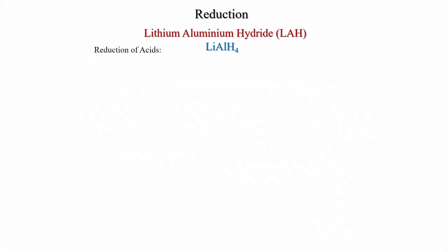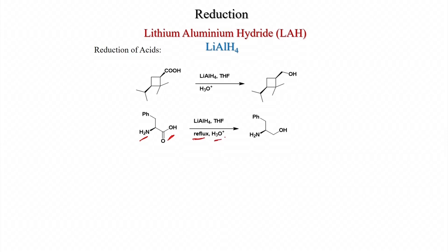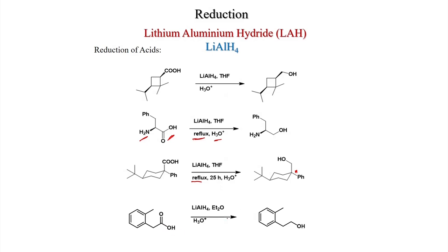Reduction of acids: cyclobutanecarboxylic acid is reduced to the alcohol with LiAlH4/THF followed by protic workup. An alpha-amino acid (with both amino group and carboxylic acid) reacts with LiAlH4/THF under reflux followed by acid treatment to give the amino alcohol. A cyclohexyl quaternary carboxylic acid is also reduced under reflux to give the alcohol. A phenylacetic acid derivative on LiAlH4 reduction gives the primary alcohol.